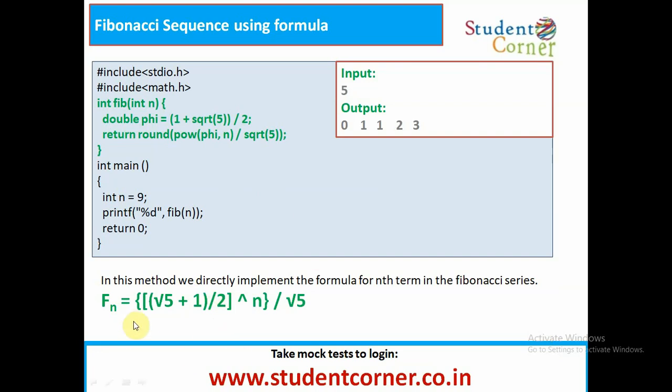Using this formula, F of n equals square root of 5 plus 1 by 2 power n by root 5. If we are using this formula, obviously, we will get the results. Directly, I am using this formula, double phi equals, first we need to find the value of this, 1 plus root 5 by 2. After that, we are adding, we are multiplying with n by square root of 5.